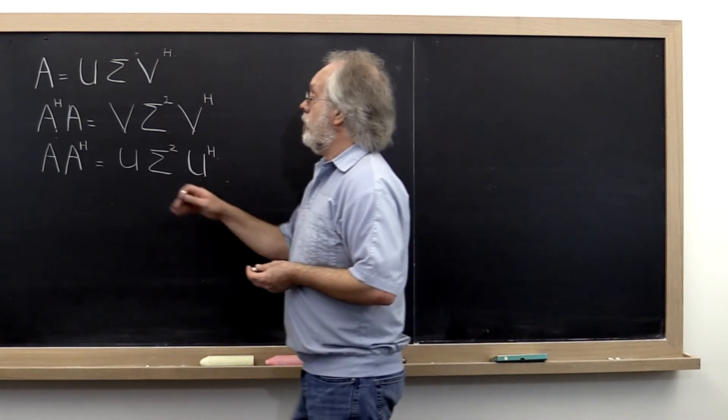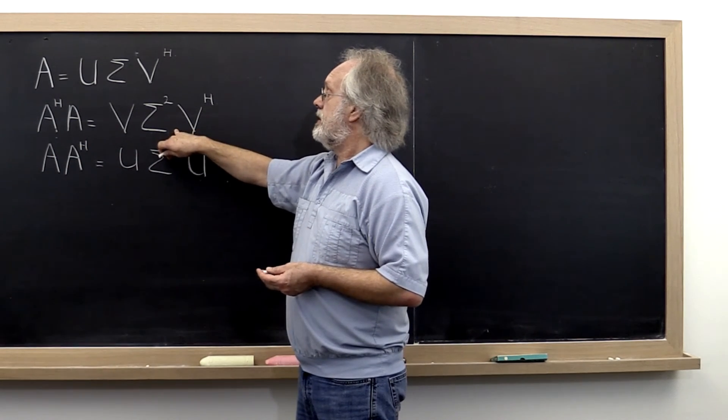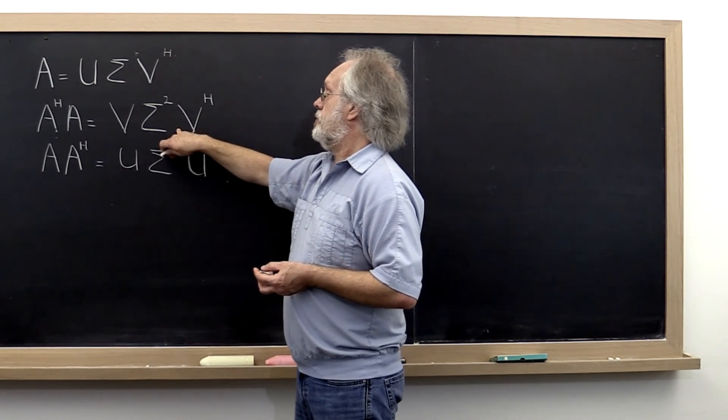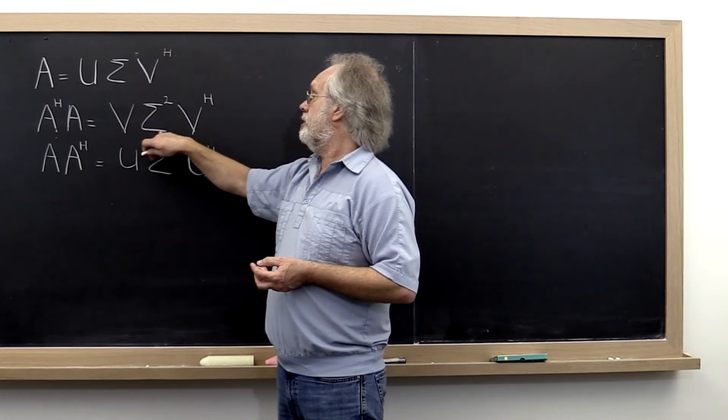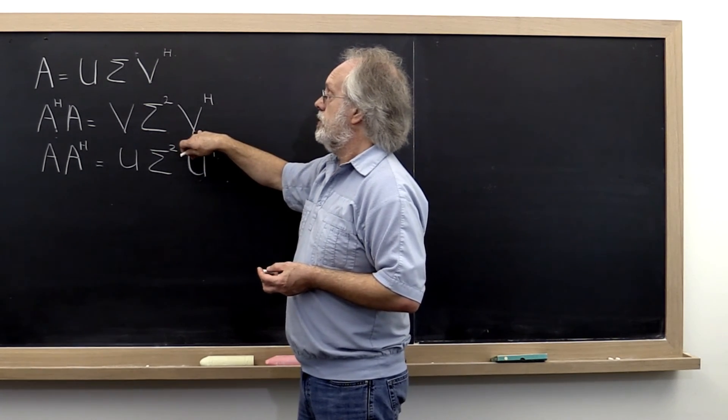Now if you form A^H*A, then its spectral decomposition is given by V Sigma^2 V^H.